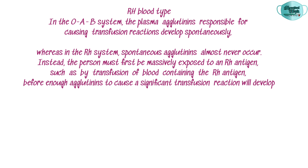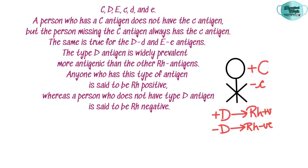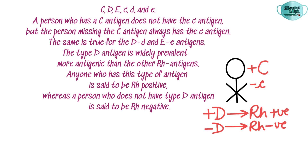There are six common types of Rh antigens, each called an Rh factor, designated as C, D, E (uppercase) and c, d, e (lowercase). A person who has the uppercase C antigen does not have the lowercase c antigen, but a person missing the C antigen will always have the c antigen; the same is true for D and E antigens. The type D antigen is widely prevalent and considerably more antigenic than other Rh antigens, so anyone with it is said to be Rh positive, while a person without type D antigen is said to be Rh negative.